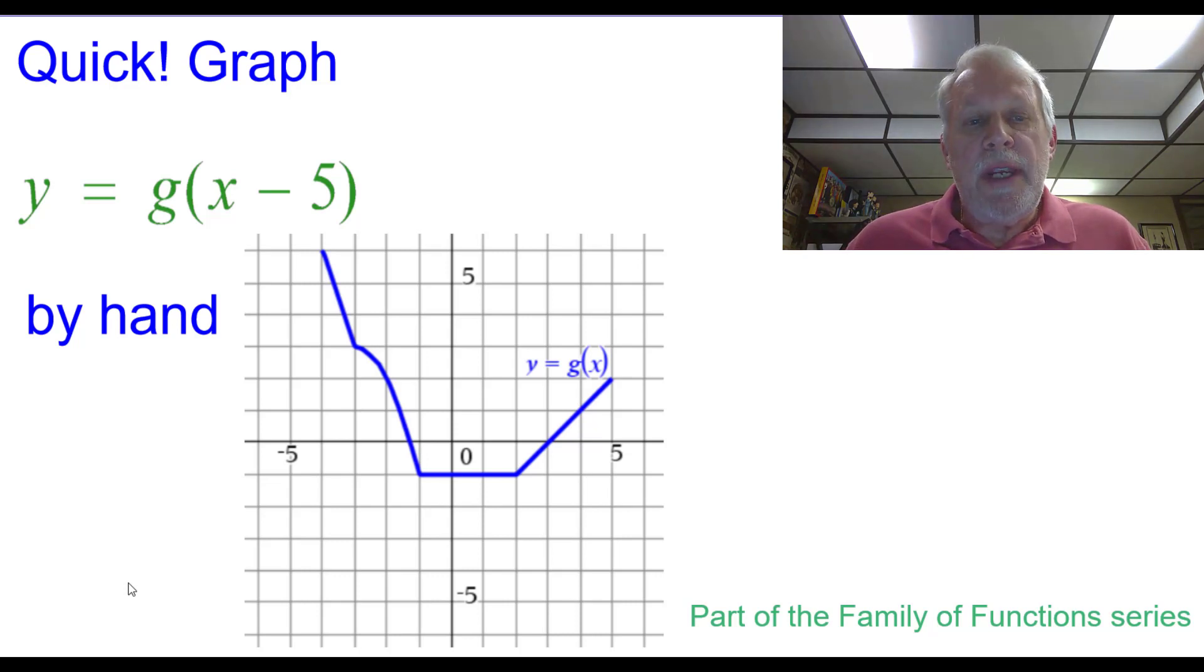Quick graph: y equals g of the quantity x minus 5 by hand, given the graph of y equals g of x. This is part of the family of functions series.